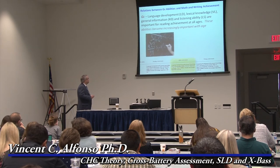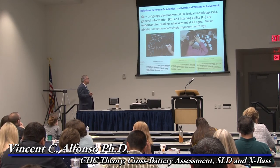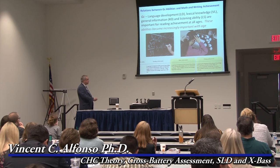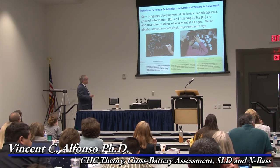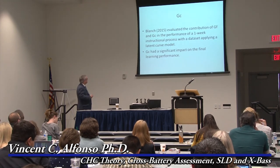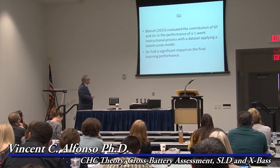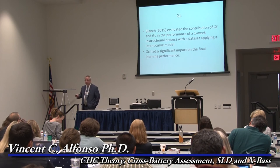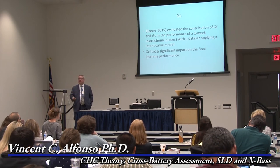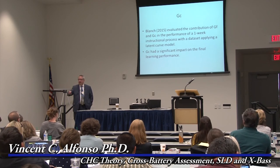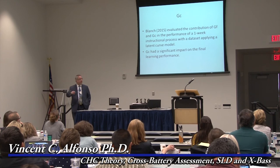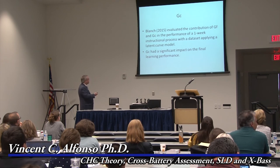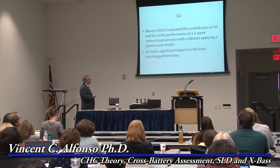In terms of math and writing, it's basically the same thing. GC is sometimes thought of as academic achievement itself — it's what we've learned. The Blanche 2015 study showed GC had a significant impact on final learning performance, adding evidence that GF is important for rate of learning while GC is important for what is actually learned. Now we move on to GA, which is still not assessed by most IQ tests. The WJ-4 certainly has several measures of GA. One of my favorite instruments that isn't talked about or used very often is the Differential Ability Scales, Second Edition — the DAS-2 — which has a phonological processing test.